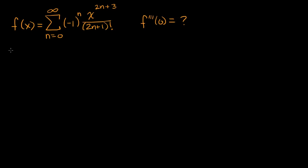Let me do it the second way first — just expand it out. F of x is equal to: when n is equal to zero, this is negative one to the zero, which is just one, times x to the zero plus three. So it's going to be x to the third over two times zero plus one factorial, so that's just over one.